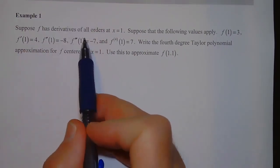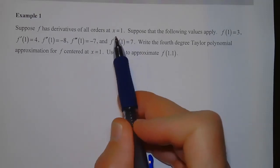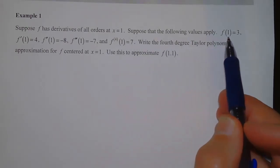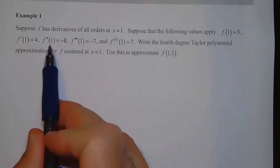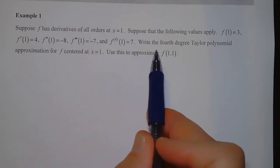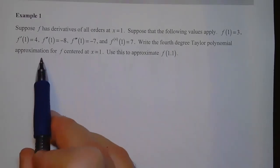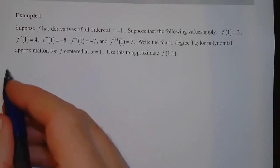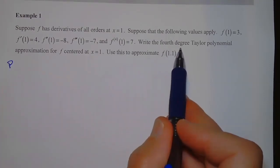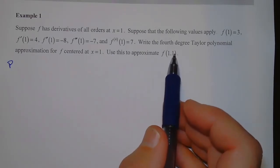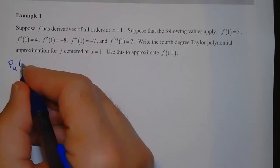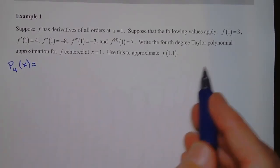For example one, suppose f has derivatives of all orders at x equals 1, with the following values: f(1) = 3, f'(1) = 4, f''(1) = -8, f'''(1) = -7, and the fourth derivative of f at 1 equals 7. We want to write the fourth degree Taylor polynomial approximation for f centered at x equals 1, so we'll go up to (x minus 1) to the fourth power.